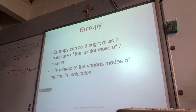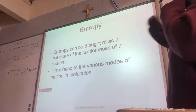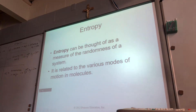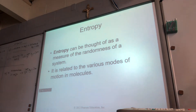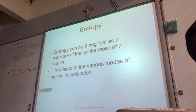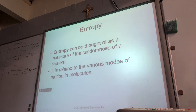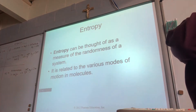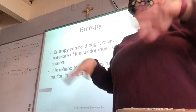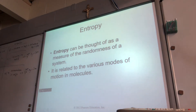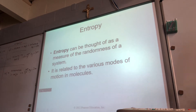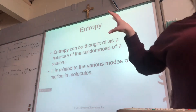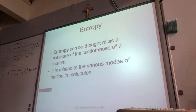Entropy is something that measures how random a system actually is, and it has to do with the motion of molecules. The most common way we've measured molecular speed is temperature—we talked about kinetic energy of molecules, which is directly related to temperature. Lower temperatures tend to be solid, medium temperatures are our liquids, and higher temperatures tend to be the gas phase. Entropy is all about how random our molecules are, how much they're moving, and whether or not that movement is predictable.